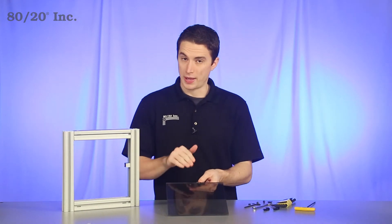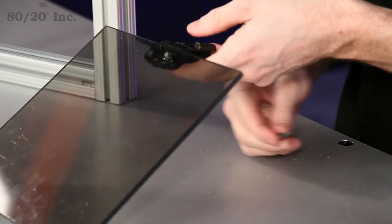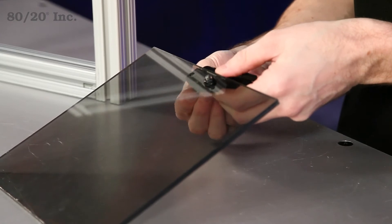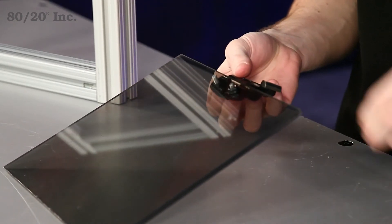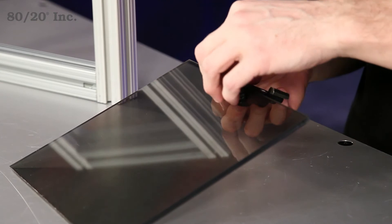Now we're going to work on putting our hinge on the panel itself. We got one bolt in there, so we'll take one more bolt and finish it off. Grab our washer and our hex nut.